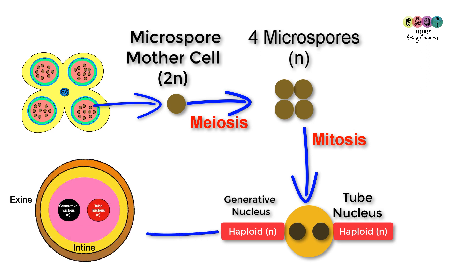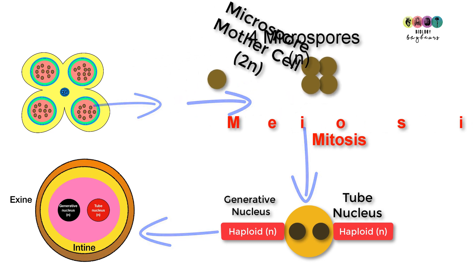Eventually what will form is a mature pollen grain. It will have the two haploid nuclei, and it will have an inner coating known as the intine and an outer coating known as the exine.